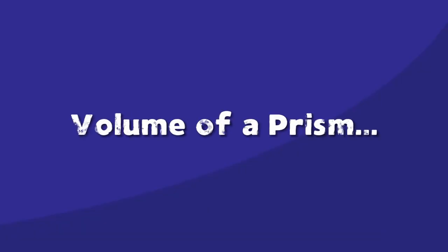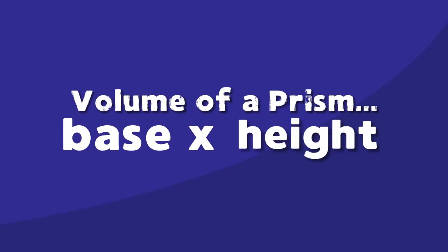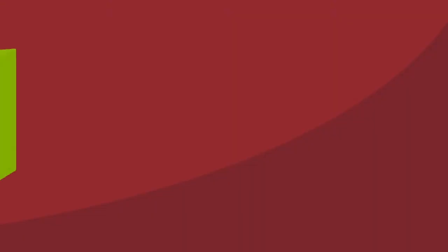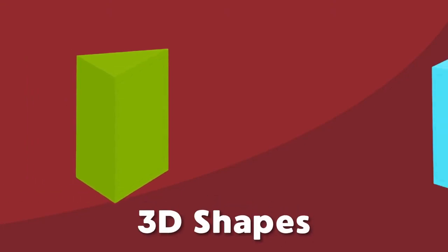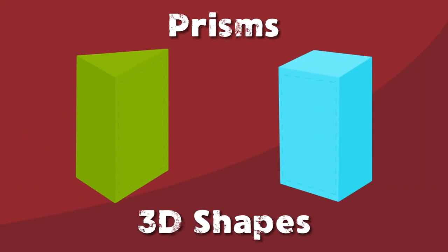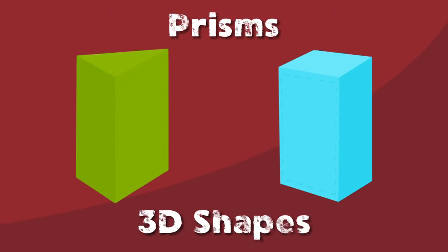The volume of a prism is base times height — you can do this for all of them, that is right. These are 3D shapes, let's learn about prisms, a type of polyhedra. A prism is a kind of 3D shape where the top and bottom faces are the same.